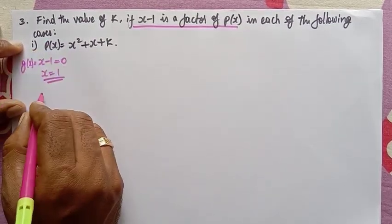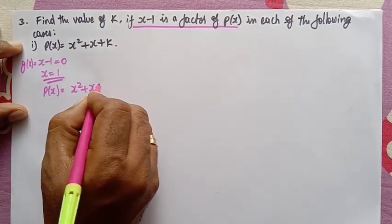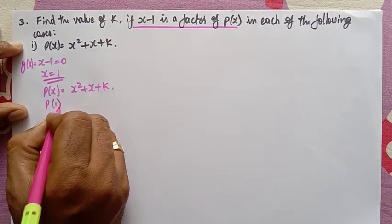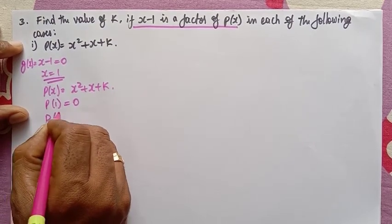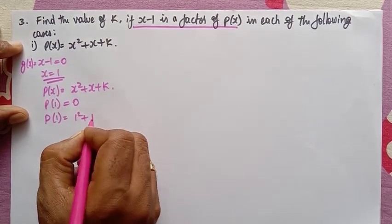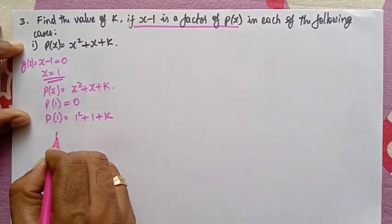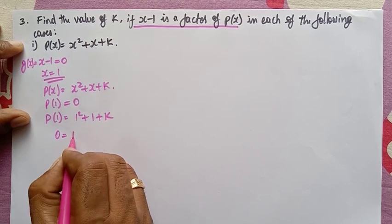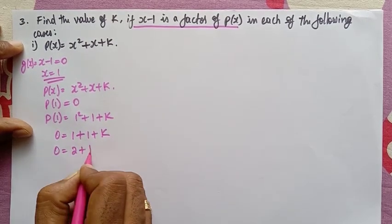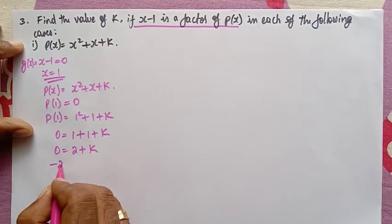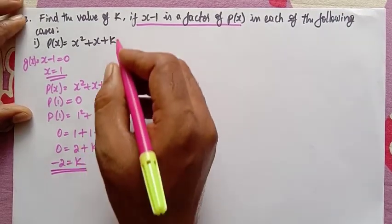Let us substitute this value. p of x is equal to x square plus x plus k. So p of 1 is equal to 0. p of 1 is equal to 1 square plus 1 plus k. So 0 is equal to 1 plus 1 plus k, which gives 0 equal to 2 plus k. Therefore k is equal to minus 2. This is the value of k in the first problem.